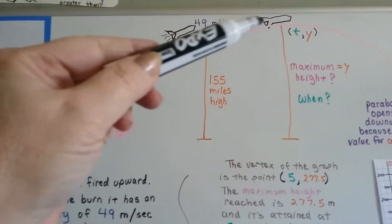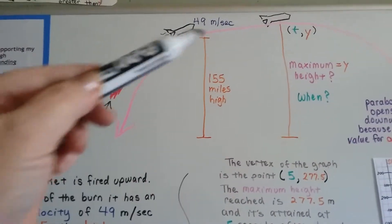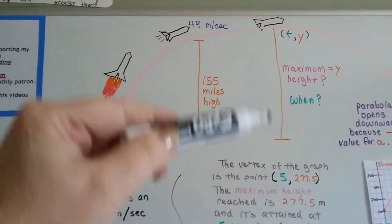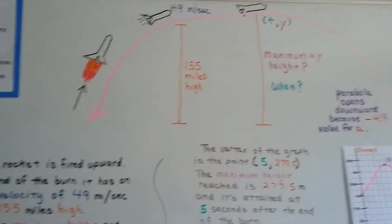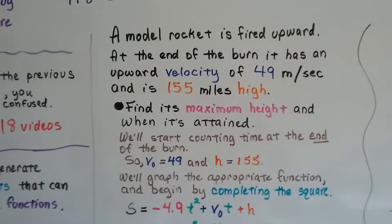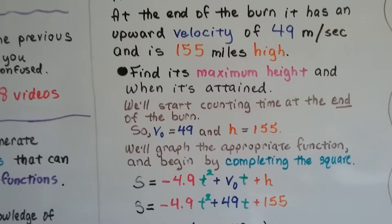Now it's going to keep thrusting forward. We want to find its maximum height and when that happens, before it falls to the ground. So we need to find its maximum height and when it's attained.